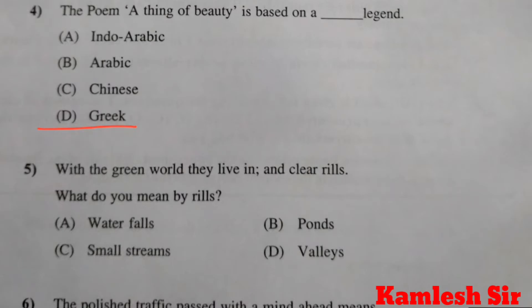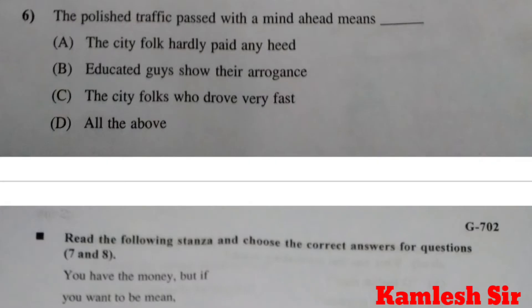5th: With the green world they live in and clear rills. What do you mean by rills in this sentence? The right answer of question number 5 is C, small streams. Question number 6: the polished traffic passed with a mind ahead means — 6th A, the city folk hardly paid any heed.